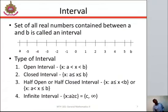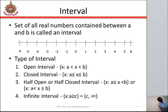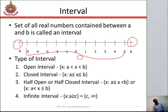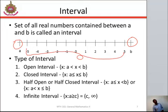Now, the next topic we are going to be talking about is interval. What is an interval? Interval is the distance — all the numbers between two points, say point A and point B. The distance between them is known as the interval. There are different types of interval: open interval, closed interval, half-open or half-closed interval, and infinite interval.